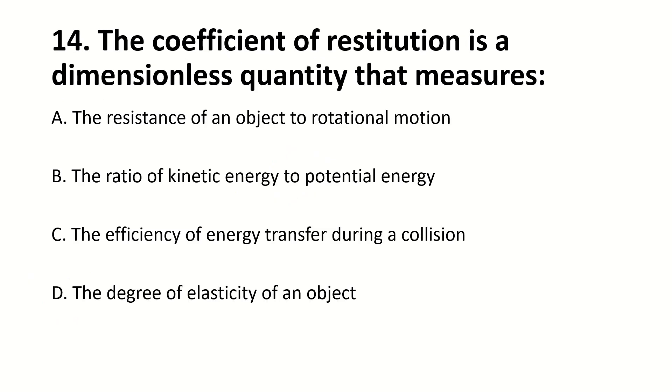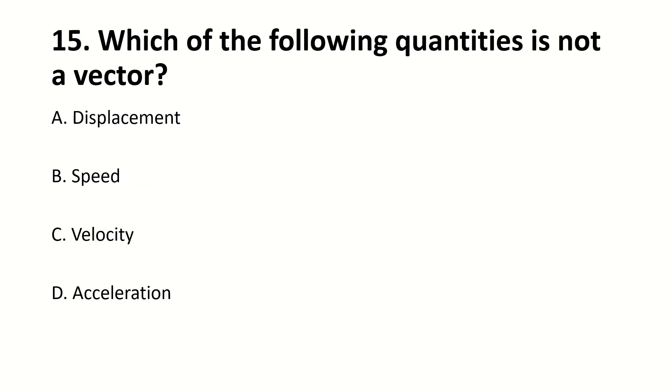The coefficient of restitution is a dimensionless quantity. It measures? Answer is C, the efficiency of energy transfer during a collision. Which of the following quantity is not a vector? Answer is B, speed.